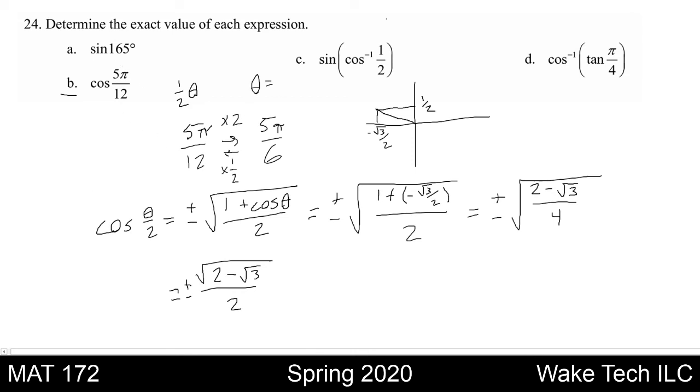Now I find it helpful to write the axis endpoints as divided by 12. So this would be 0π/12. This would be 6π/12. This would be 12π/12. And this would be 18π/12.